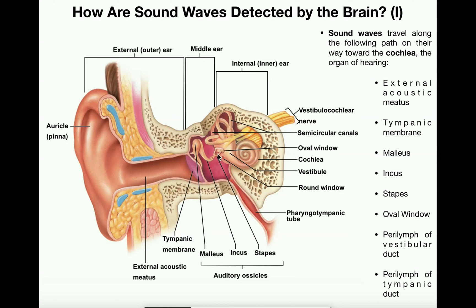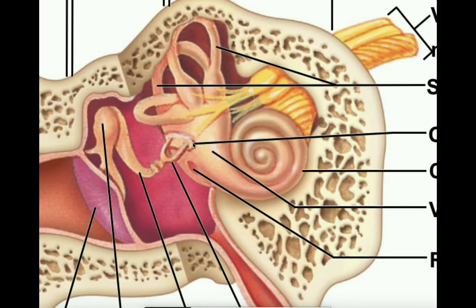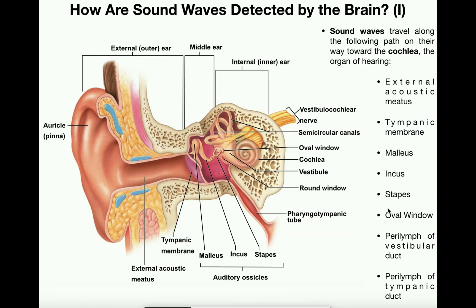The stapes is a very small bone that actually plugs up a hole called the oval window. After passing through the oval window, those vibrations end up inside the cochlea. There are fluids inside the cochlea that vibrate as a result of the stapes. This fluid is called perilymph, found in two ducts: the vestibular duct, which is first in sequence, and the tympanic duct.